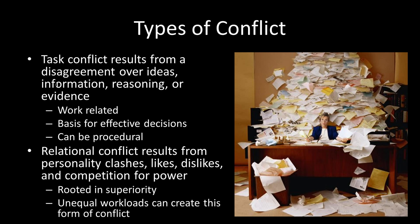There are two key types of conflict worth discussing: task conflict and relational conflict. Task conflict stems from disagreement about the ideas of the group, the processing of information, and access to evidence — this is your work-related conflict. Task conflict can be good because it forces people to critically evaluate information and can be procedural, especially if you have allocated a devil's advocate to disagree with majority decisions in order to enhance critical thinking.